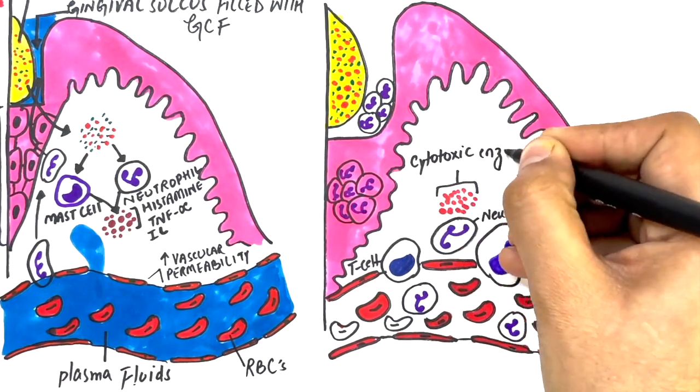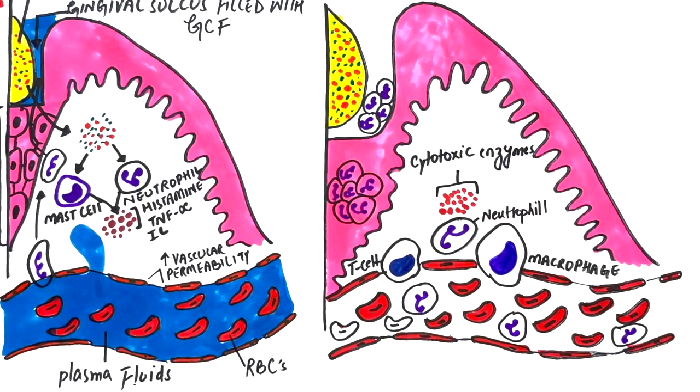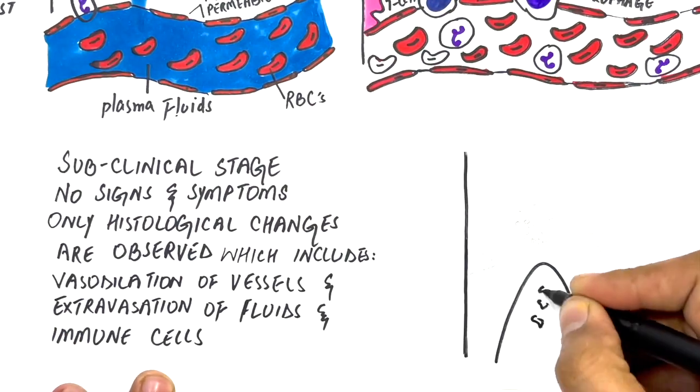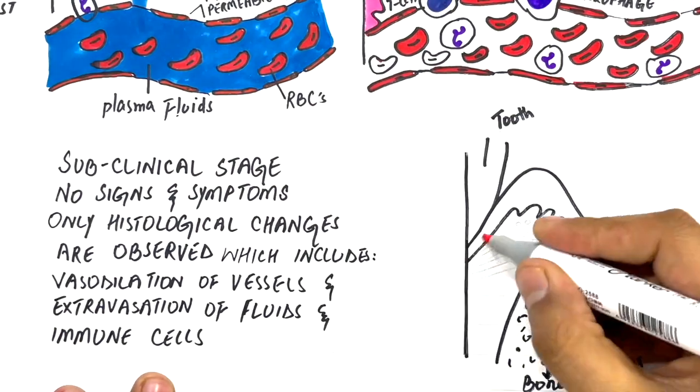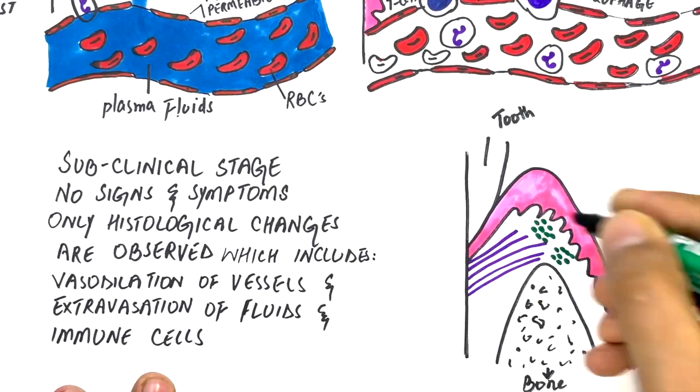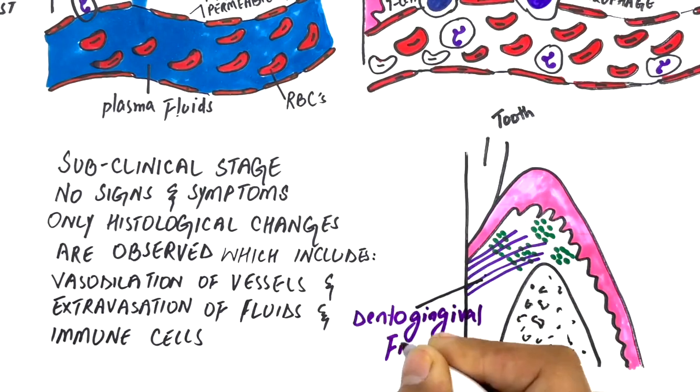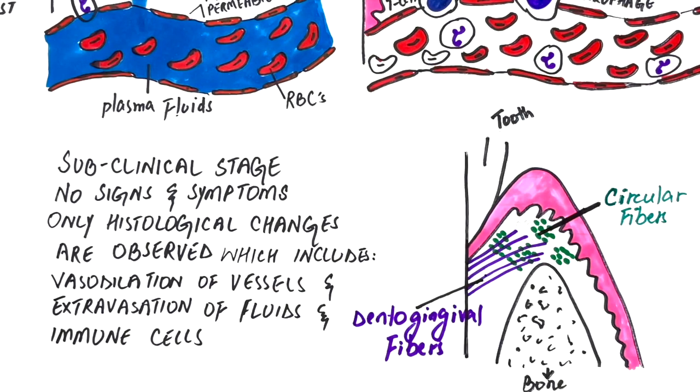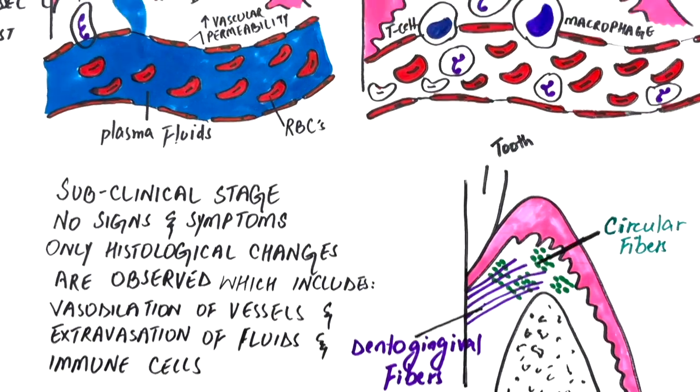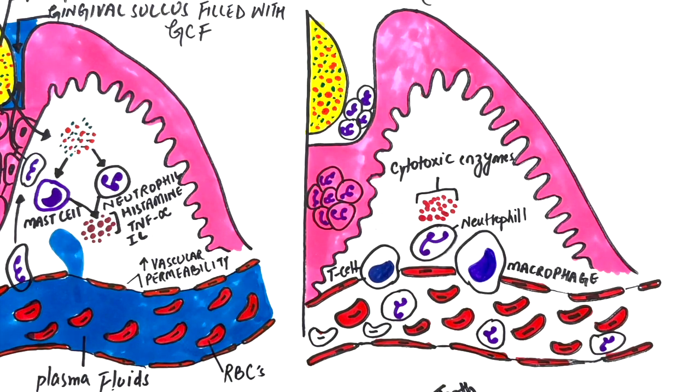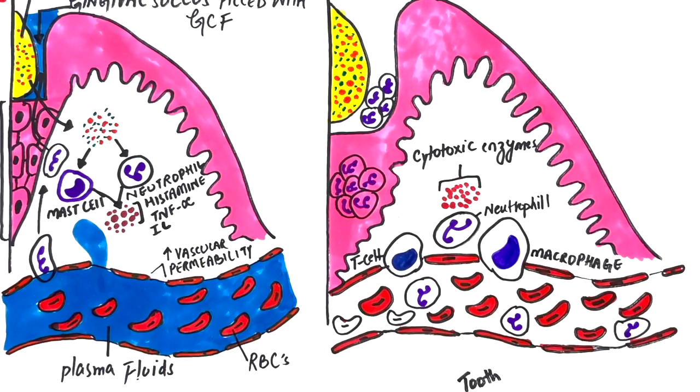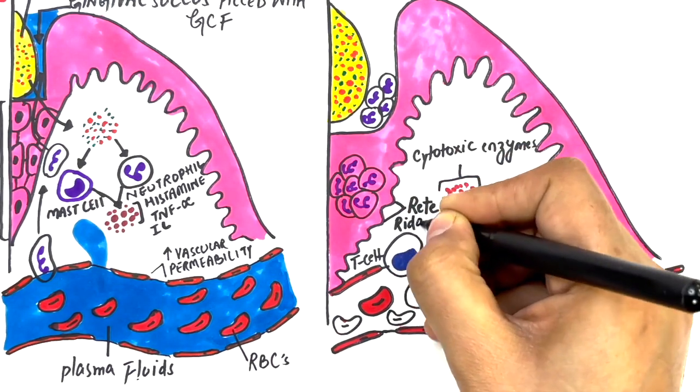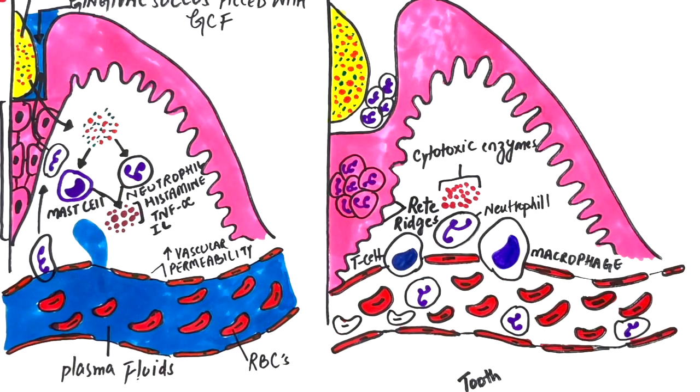The neutrophils release cytotoxic enzymes in an attempt to kill the invading bacteria which, along with killing bacteria, destructs some nearby tissues like the collagen fiber bundles of the gingiva. The fiber bundles destructed mainly are the dento-gingival and the circular fibers. The spaces left behind by the destruction of collagen fibers are soon filled by the proliferation of the junctional epithelium. The junctional epithelium forms epithelial rete ridges, which are the finger-like projections of the junctional epithelium within the underlying connective tissue.